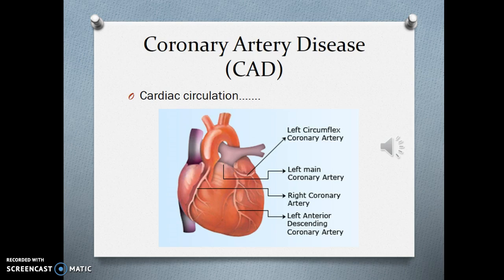Let's look at cardiac circulation. There are basically two main areas from the aorta that will perfuse your heart. One is the right coronary artery, and the other is on the left side starting with the left main coronary artery, which branches into the circumflex and the left anterior descending coronary artery. The right side tends to feed the sinoatrial node and the inferior wall of the heart, whereas the left side feeds most of the left ventricle and the anterior and posterior walls of the heart.